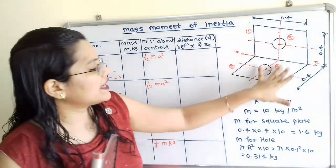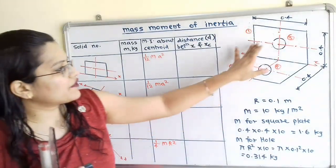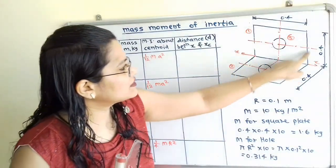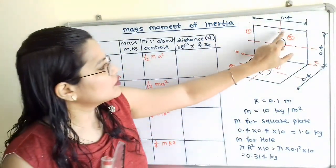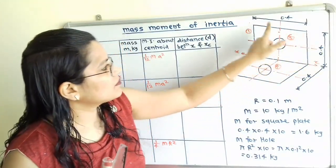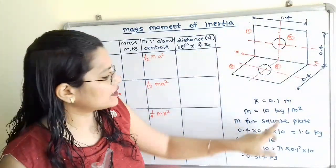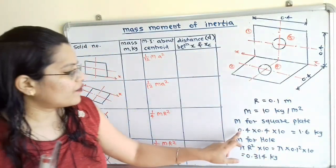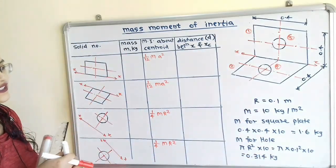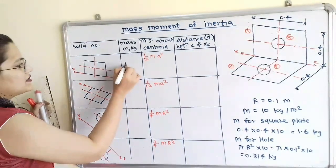We will first calculate the area of the given parts. For the square plate, we calculate its area: area = 0.4 × 0.4. There are two sides, so we take its square. Multiplying this area by 10 gives 1.6 kg. These two square plates are identical, so the mass is the same for both.